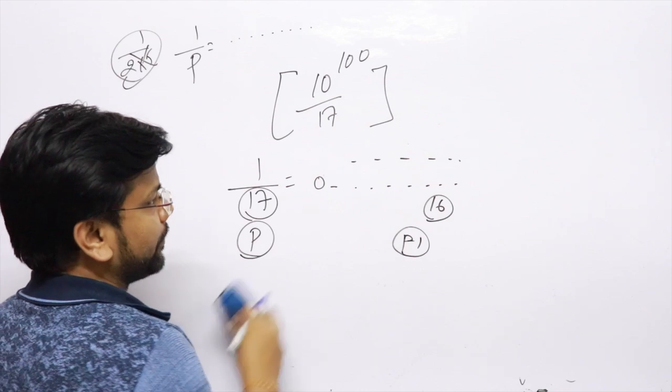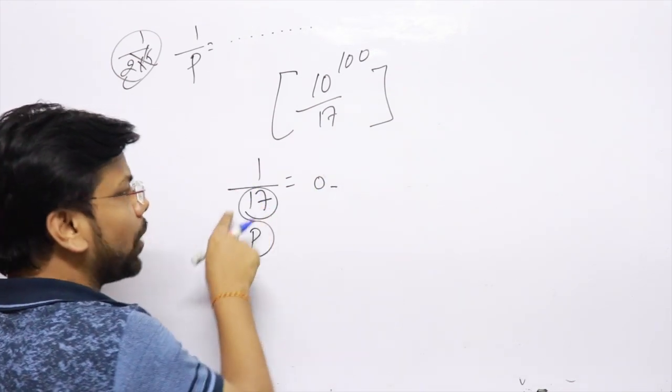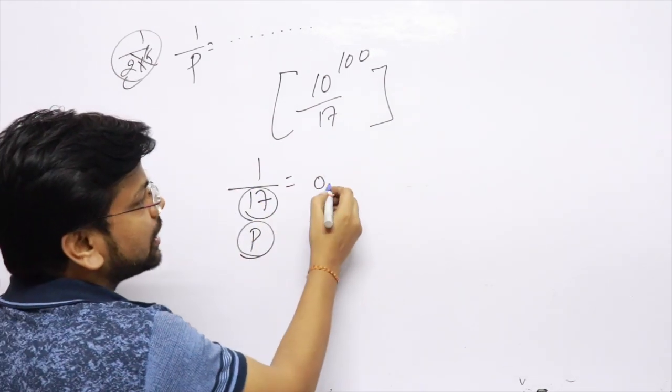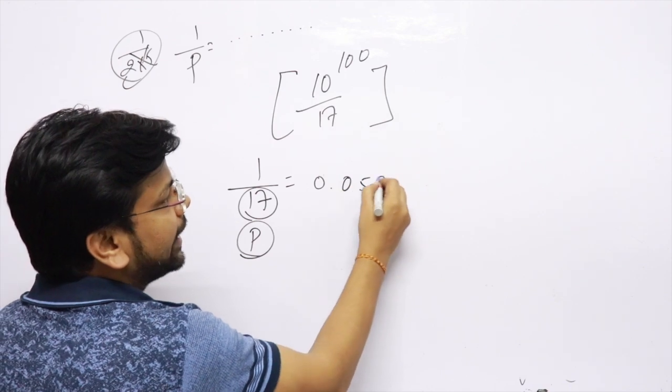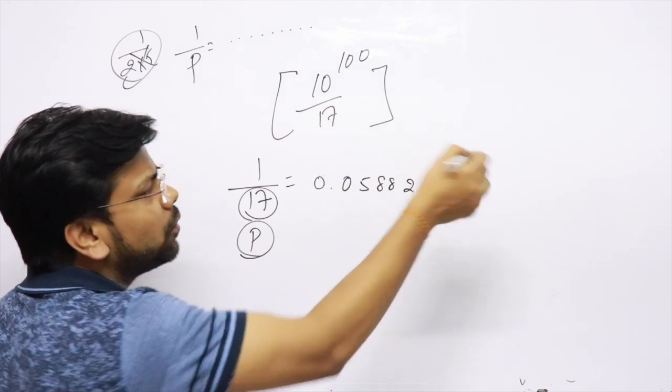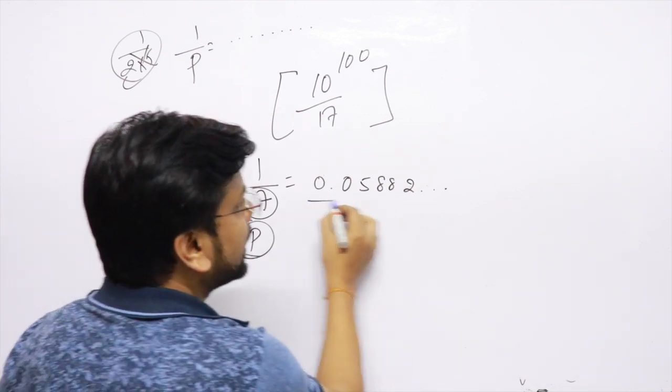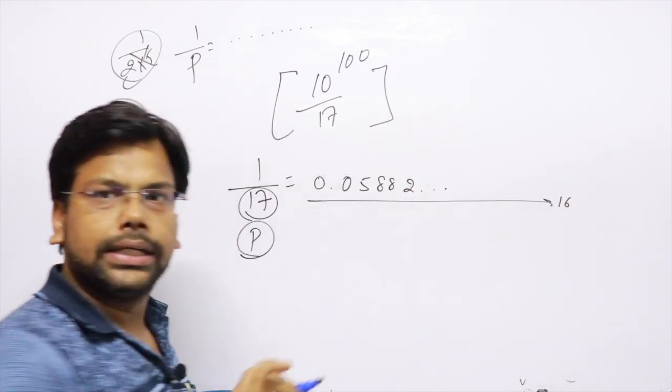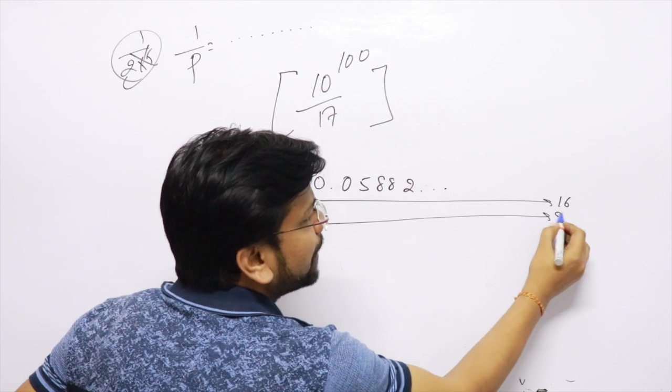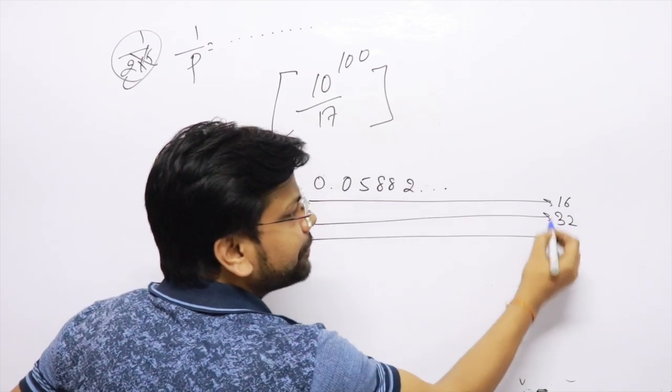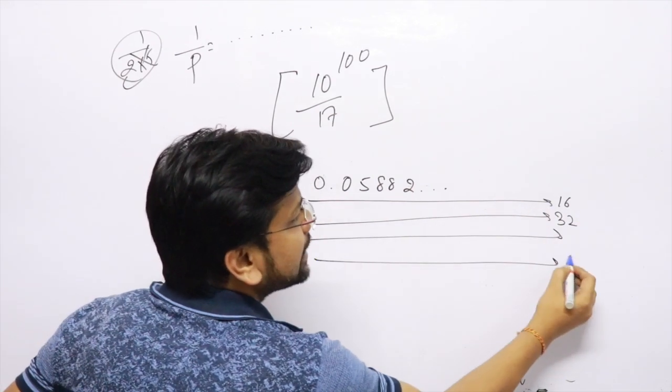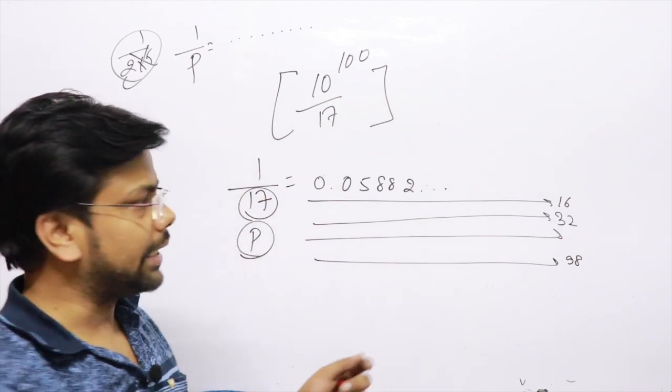And the number is 1 by 17. Now, what is it? I have to work that 1 by 17 is nothing but 0.0588 and something will happen. You will repeat the number of 16 numbers. Then you will repeat after 32, then after 48, then after 96 it will repeat.